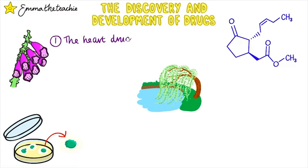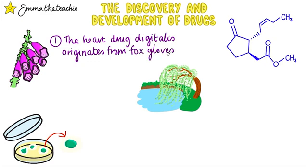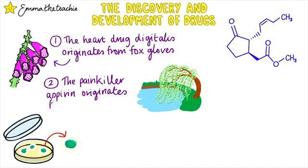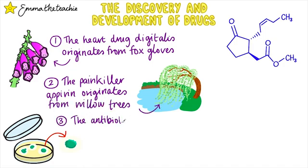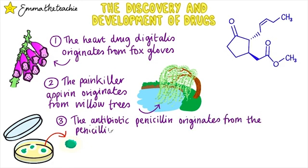The heart drug digitalis originates from foxgloves — a plant common in the UK but poisonous if eaten directly. The painkiller aspirin originates from willow trees.